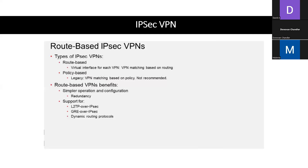Routes for route-based IPsec VPNs. The FortiGate supports two types of IPsec VPNs: route-based and policy-based. Policy-based is a legacy IPsec VPN that is supported only for backwards compatibility reasons, and it is still used.